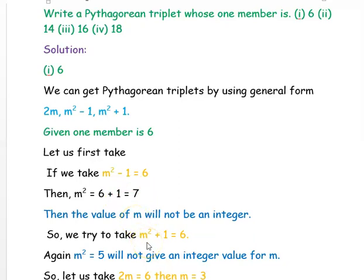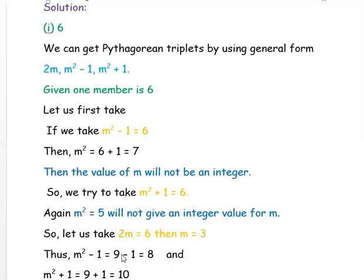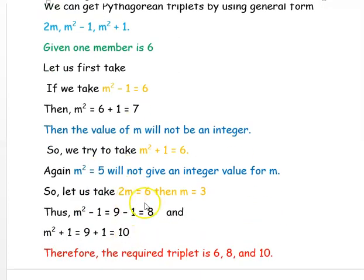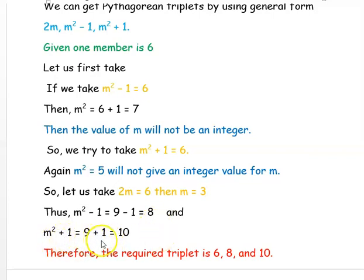So we take 2M = 6, giving M = 3. Then M²−1 = 9−1 = 8, and M²+1 = 9+1 = 10. Therefore, the required triplet for the number 6 is 6, 8, and 10.